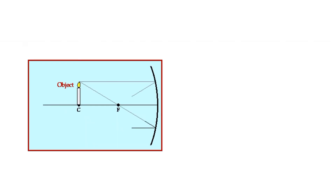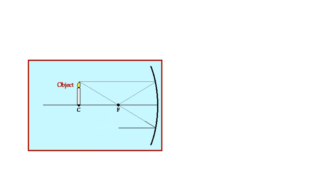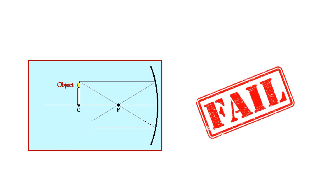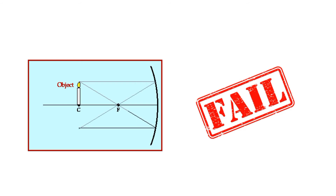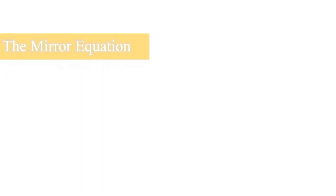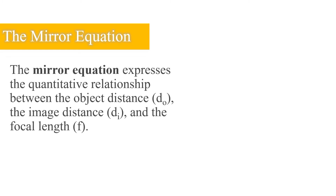Ray diagrams can be used to determine the image location, size, orientation, and type of image formed when objects are placed at a given location in front of a concave mirror. Ray diagrams provide useful information about object-image relationships, yet fail to provide information in a quantitative form. To obtain numerical information, it is necessary to use the mirror equation and the magnification equation. The mirror equation expresses the quantitative relationship between the object distance, the image distance, and the focal length.